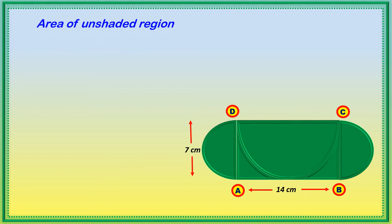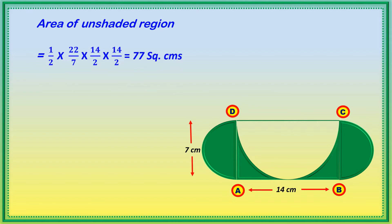Area of the unshaded region: the diameter of the semicircle is CD, which equals AB, that is 14 centimeters. Then radius is half of the diameter, 14 by 2 equals 7. So: (1/2) × (22/7) × 7 × 7 = 77 square centimeters. That is the area of the unshaded region.